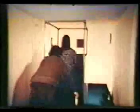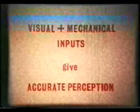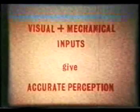The trolley is made in such a way that the subject's view is limited so that she cannot see the floor. As the trolley is moved backwards and forwards within the room, she reports: 'I'm moving forwards and backwards.' The subject maintains easy balance and reports her movements quickly and accurately. So it is true to say that visual plus mechanical inputs give accurate perception.